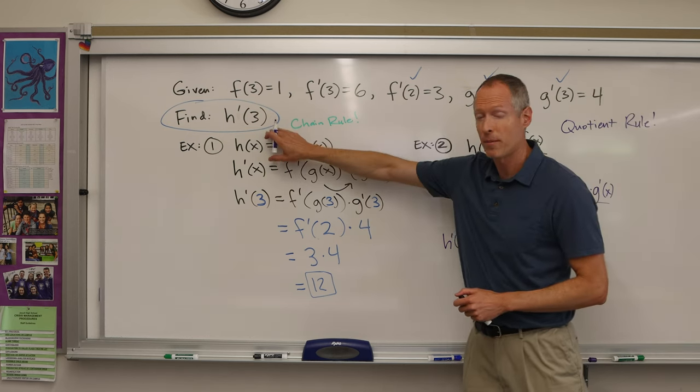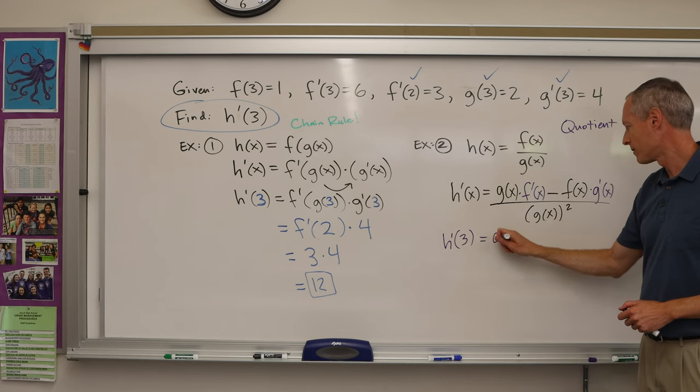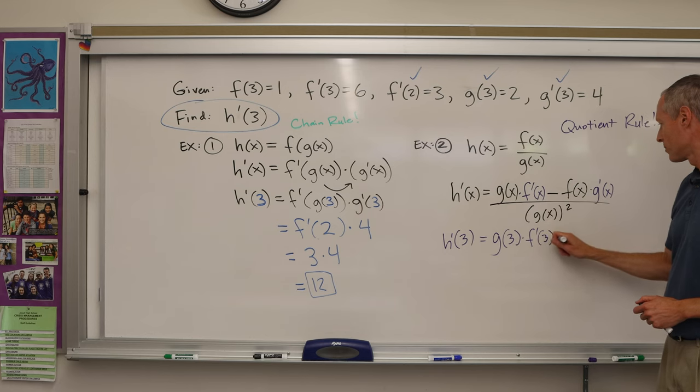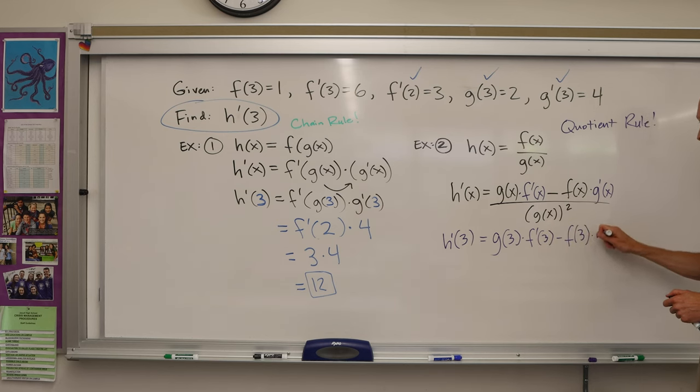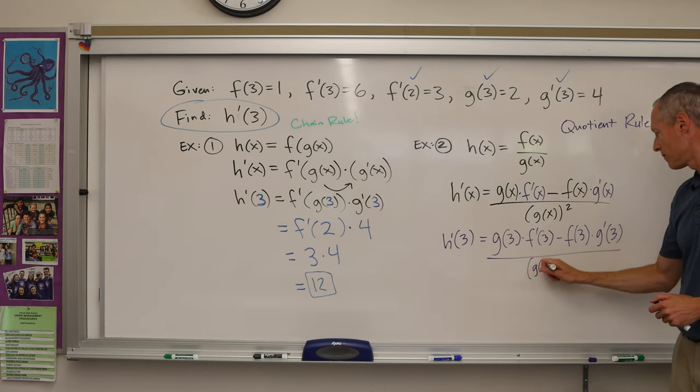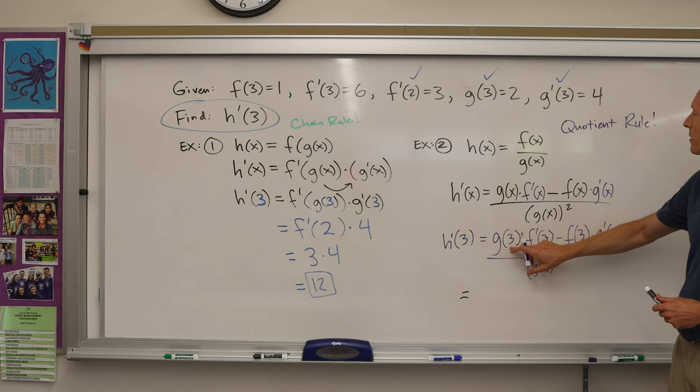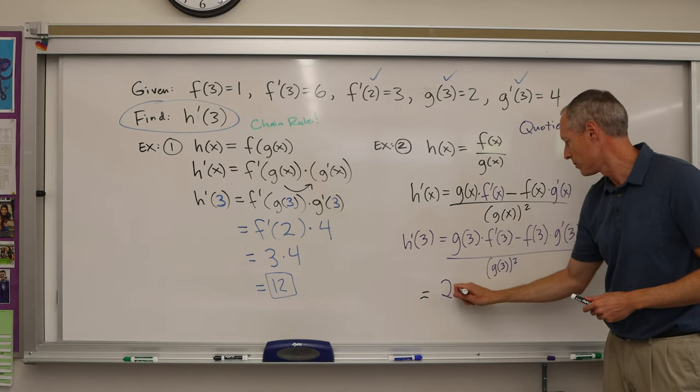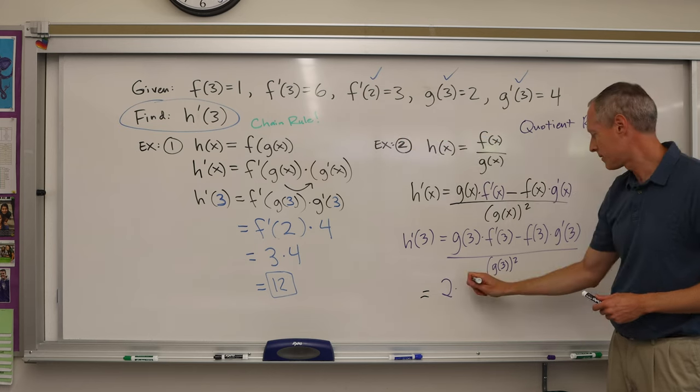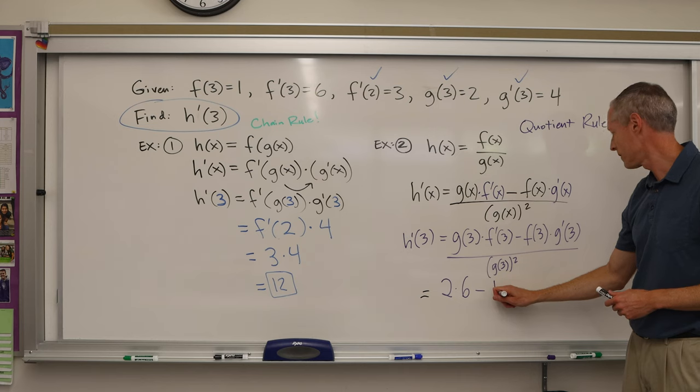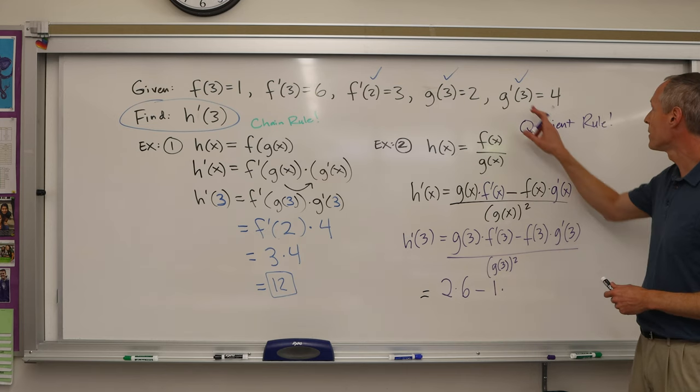Now let's finish it off. They're wanting to define h'(3), so basically I'm going to plug in 3 to all these. Just to go a little quicker, I'll do this all in the same color. So I'm replacing any x with a 3, so g(3) squared. All right, so then you look up at the top again, you replace all the values. I'll try this a little quicker. g(3) is 2, f'(3) is 6, minus f(3), the very first value there is 1, g'(3) is 4, all over g(3) squared, so 2 squared.